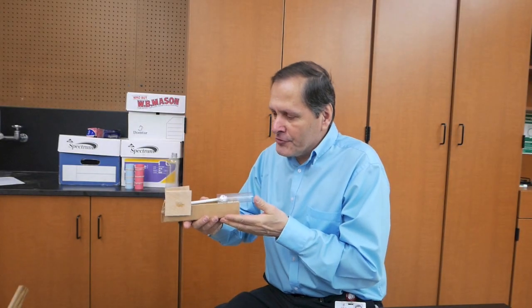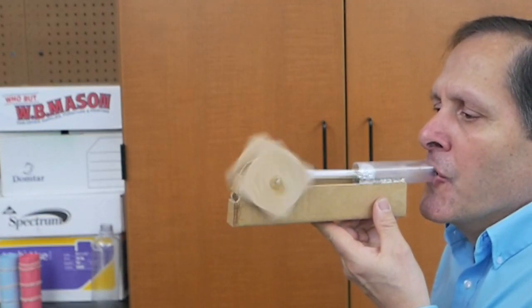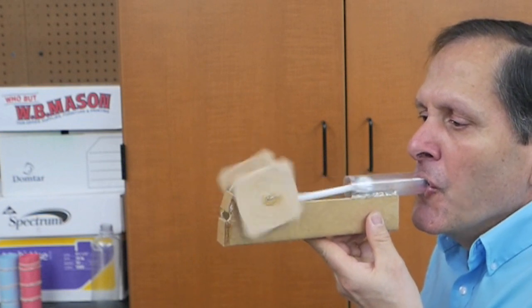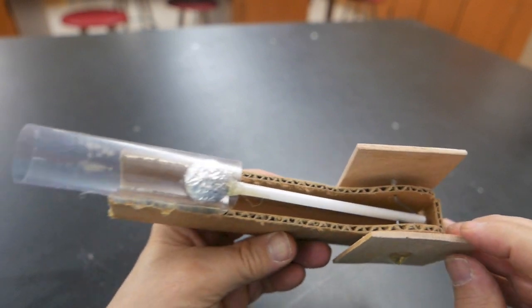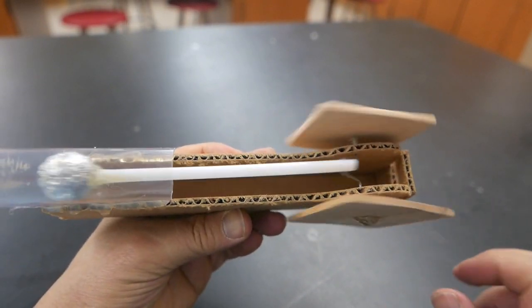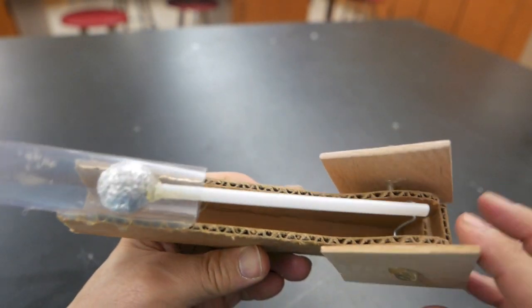Now here's my smallest version. This piece was made from a plastic tube that had candy in it and the piston is a ball that was made out of paper and aluminum foil.